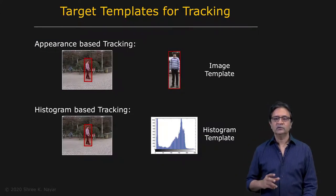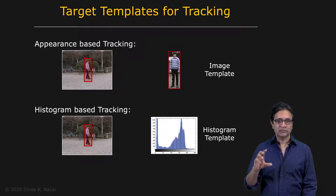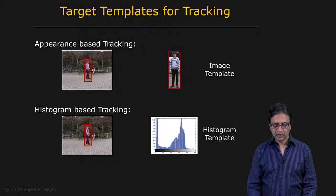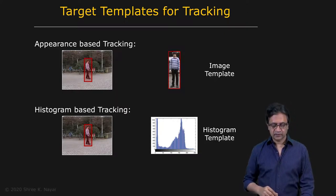We can do template matching in two ways. One is to use the image region itself — the full appearance of the object — to create templates and apply template matching. You essentially create a template from your initial image, use it to find the object in the next frame, redefine the template, and apply template matching to the following frame.